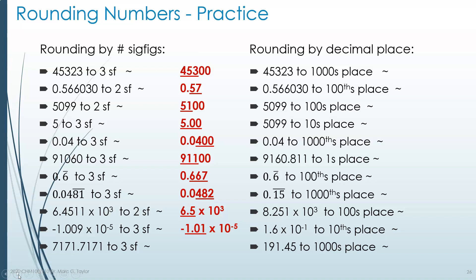7171.7171 to three sig figs. We keep the first 7, keep the first 1, and the next 7 is our third significant digit. The digit following it — the 1 — tells us we don't need to round that 7 up. So we know it reads 717-something, and that something must be a placeholder 0, giving 7,170. Note: we don't write zeros after the decimal place because those would imply extra significant digits, and we don't write a trailing decimal point because that would signal the final 0 is significant too.